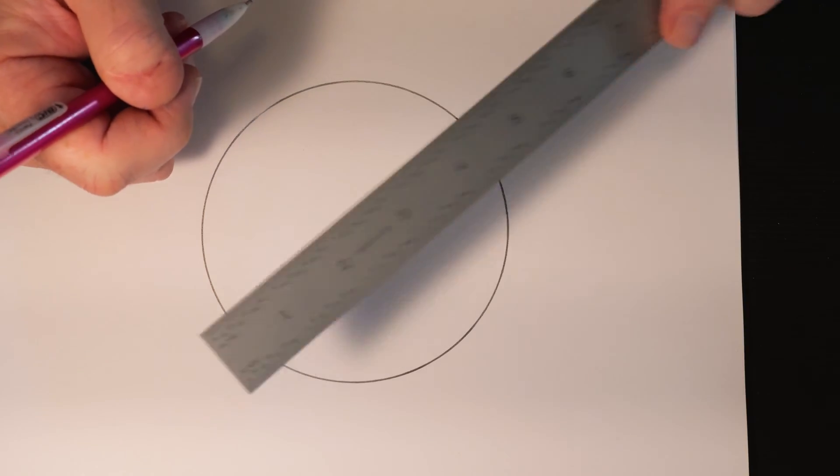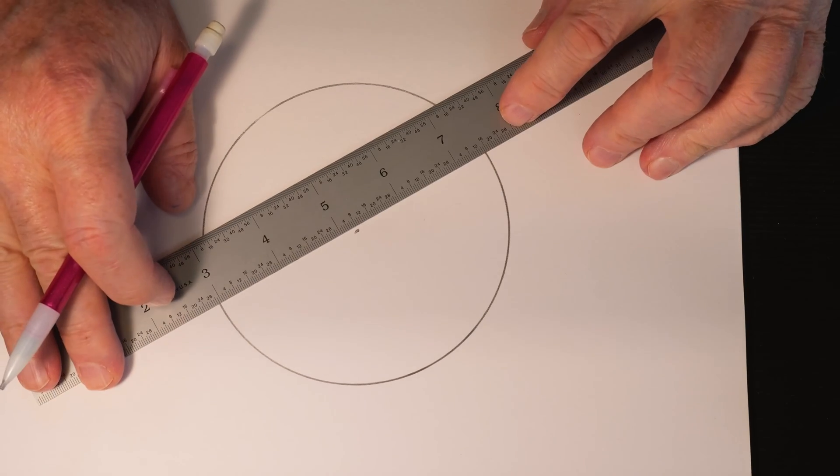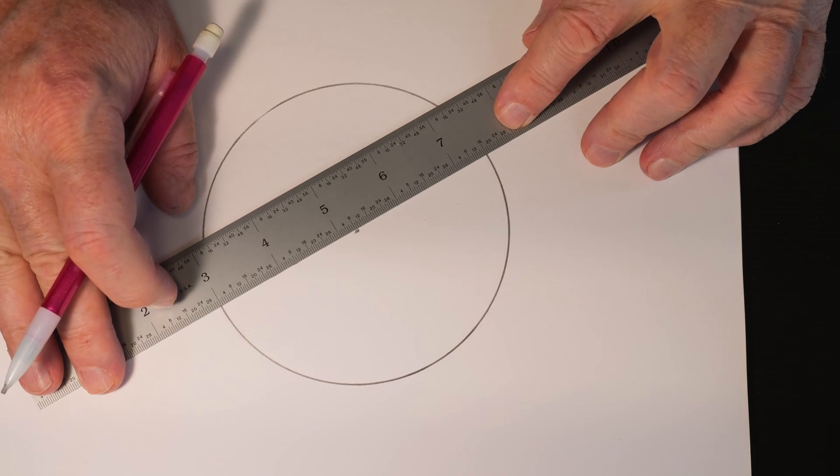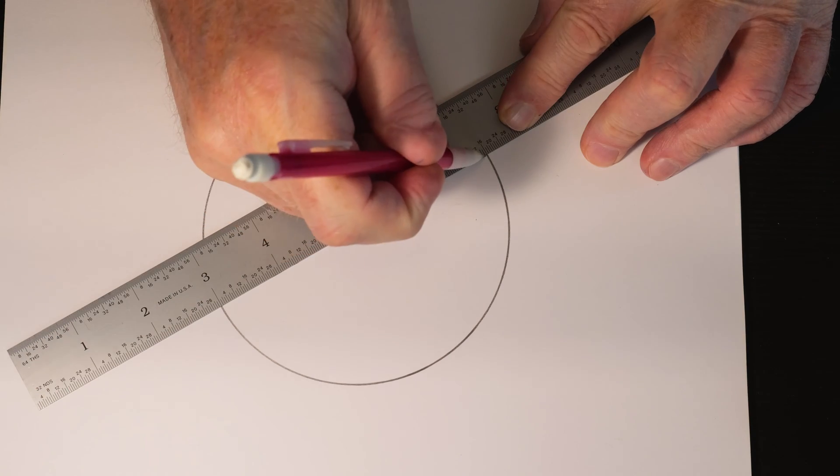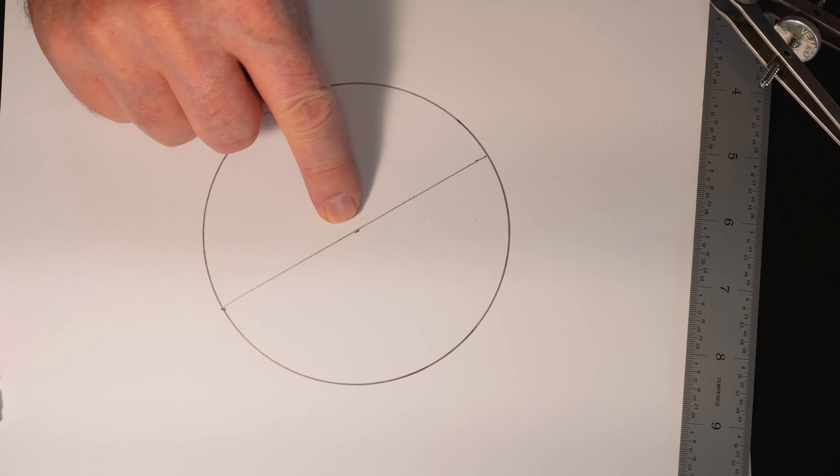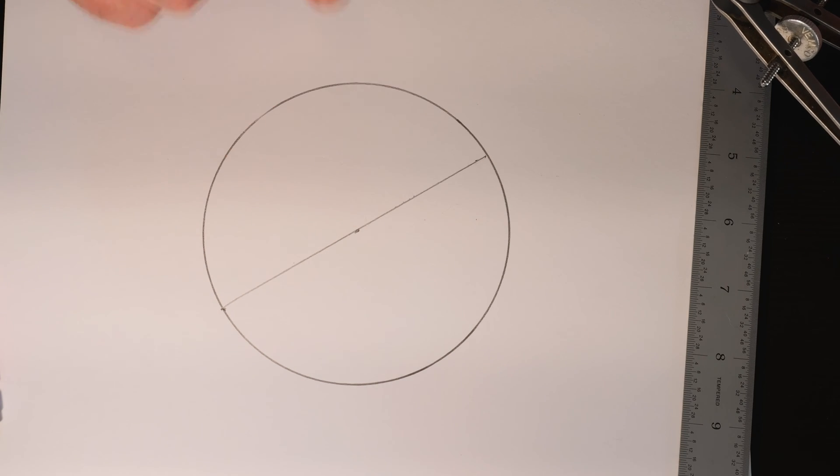So the first thing we need to do is draw a line that represents the diameter of the circle through the center point. So now we need to find the line that's perpendicular to this diameter at the center point.